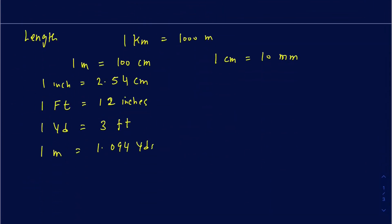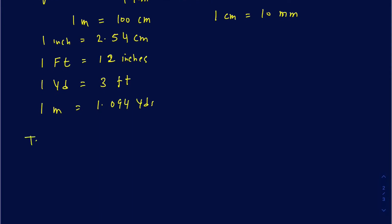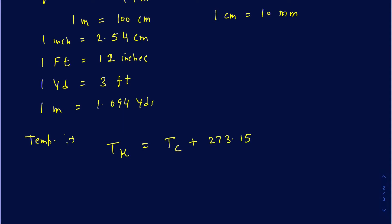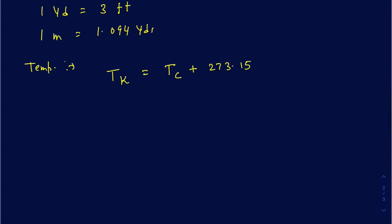There are formulas you want to be aware of. To convert Celsius to Kelvin: temperature in Kelvin equals temperature in Celsius plus 273.15. That's because the starting point for the Kelvin scale is 273.15 — so just add 273.15 to the Celsius temperature. To convert Celsius to Fahrenheit: temperature in Fahrenheit equals 1.8 times temperature in Celsius, plus 32. The starting point for the Fahrenheit scale is 32, which is why you add 32.